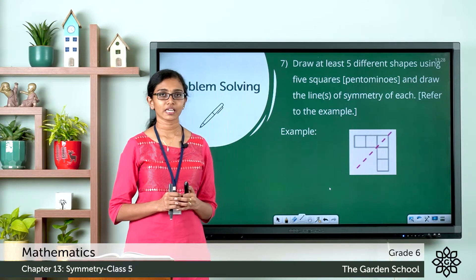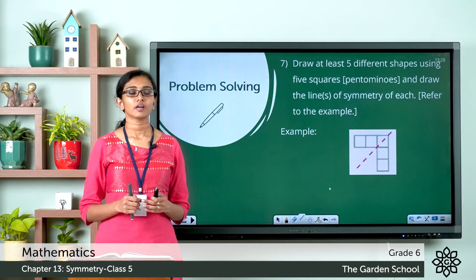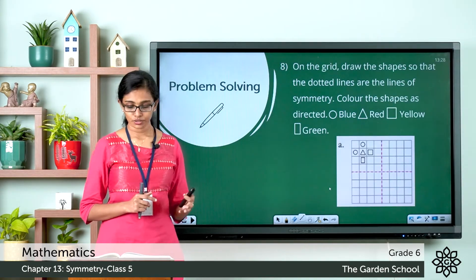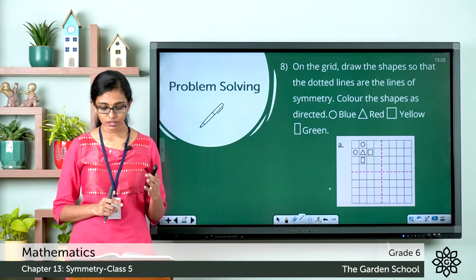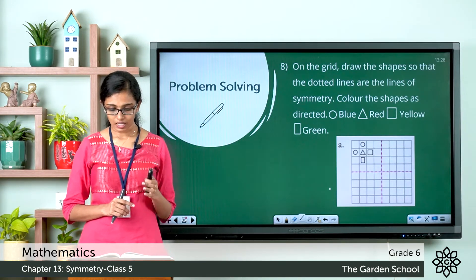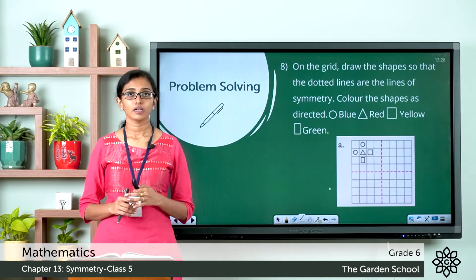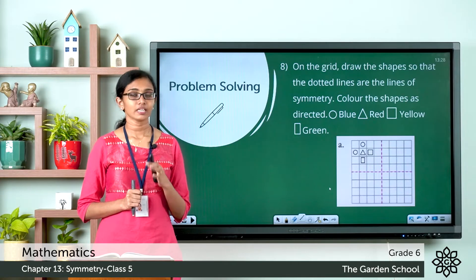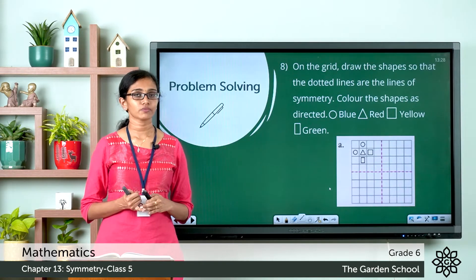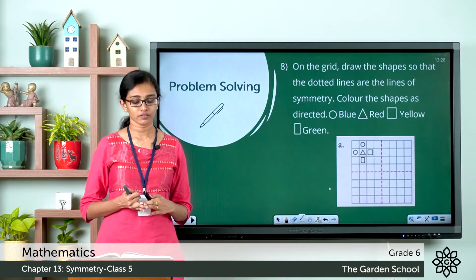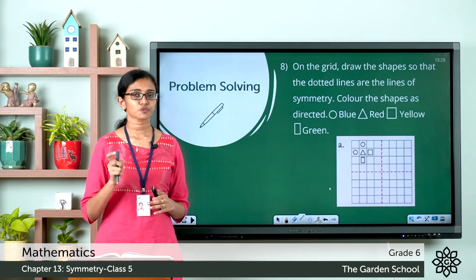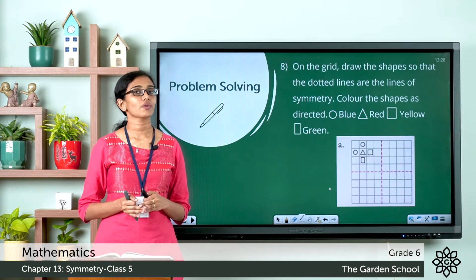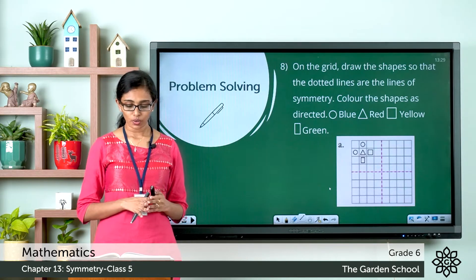Now let's discuss the eighth question. It says: on the grid, draw the shape so that the dotted lines are the lines of symmetry, and color the shapes as directed. In your textbook, you are given four sets of images. In each image, a vertical line of symmetry and a horizontal line of symmetry are given, along with small figures — a small circle, a small triangle, a small square, and a small rectangle.